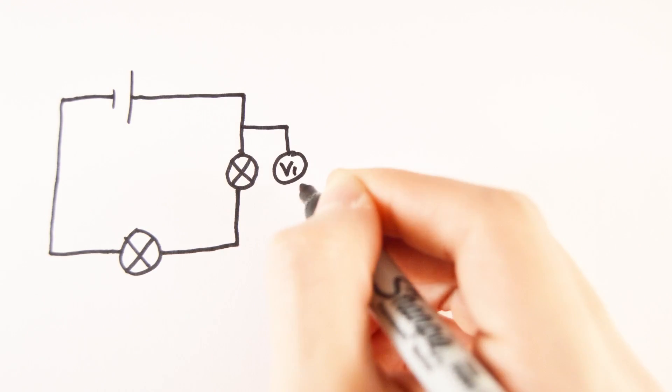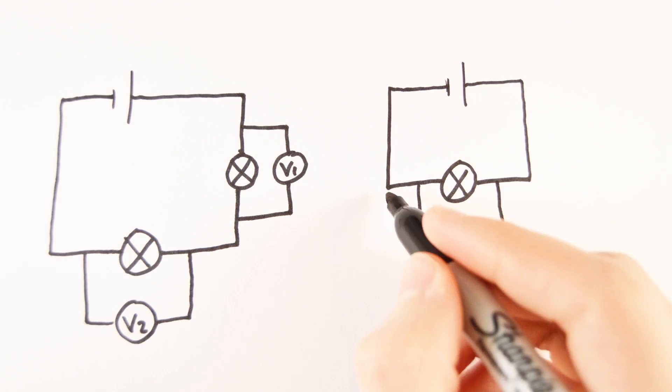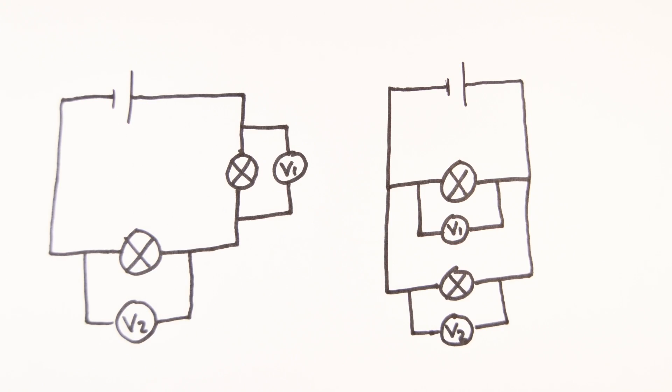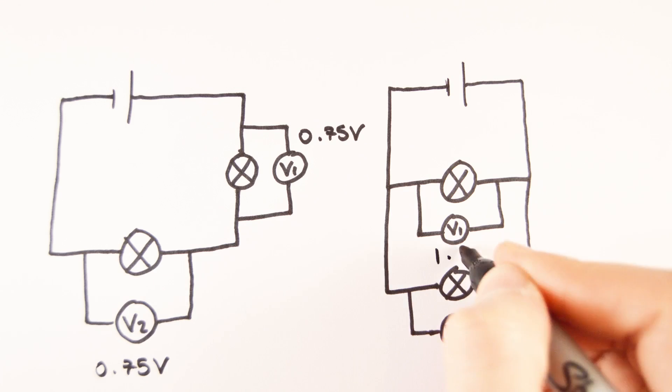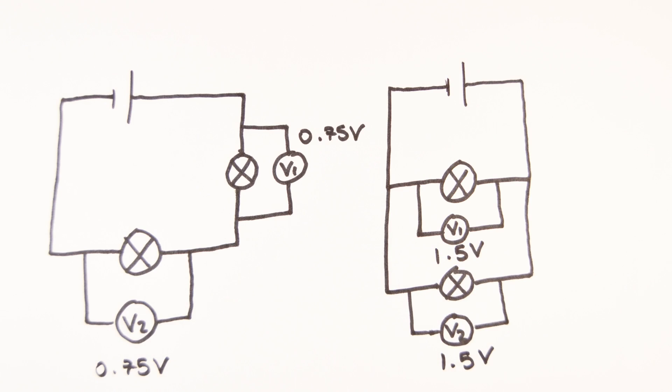To measure the voltage, a voltmeter must be fitted in parallel to the circuit. In this case, V1 and V2 will share half the power supply's voltage, but in the parallel circuit, V1 and V2 have exactly the same voltage passing through them.